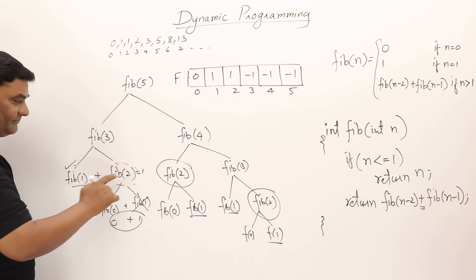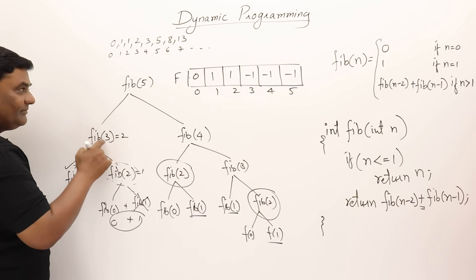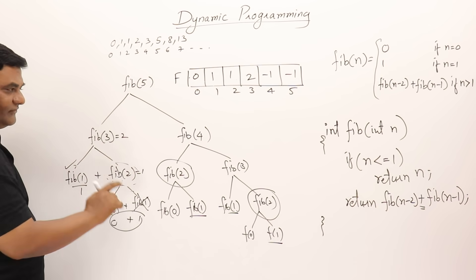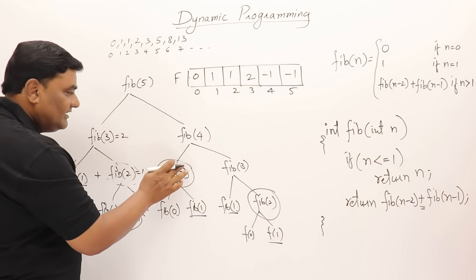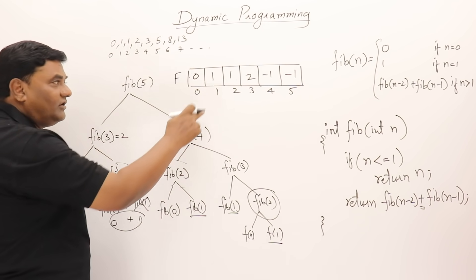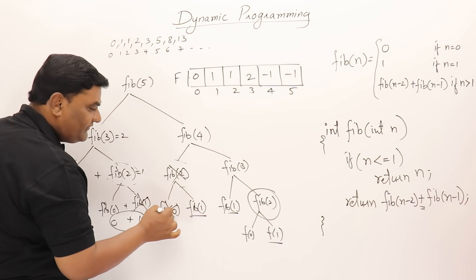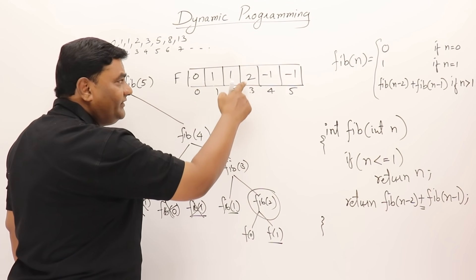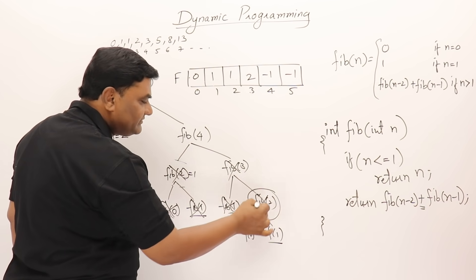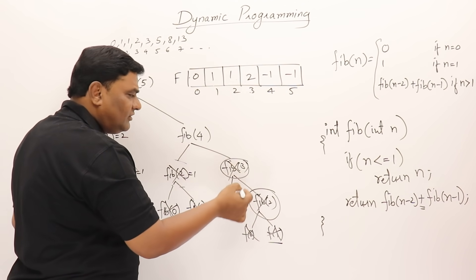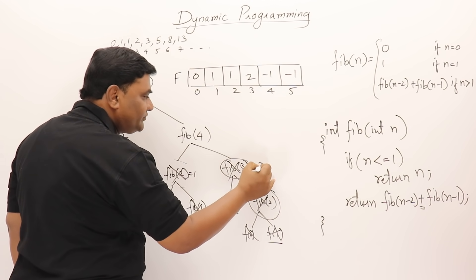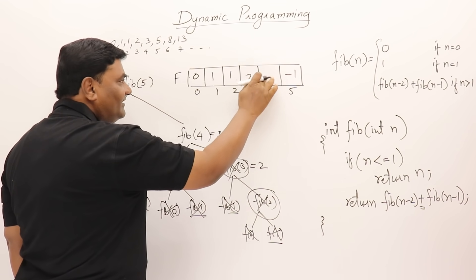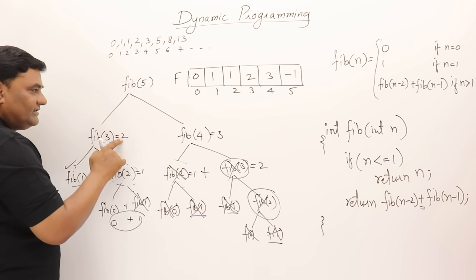Now for fib(4) — not known, call. fib(2) — we already know the result, don't call. It's 1. fib(3) — already known, don't call all those functions. The result is 2. So fib(4) = fib(2) + fib(3) = 1 + 2 = 3, stored. Then fib(5) = fib(3) + fib(4) = 2 + 3 = 5.